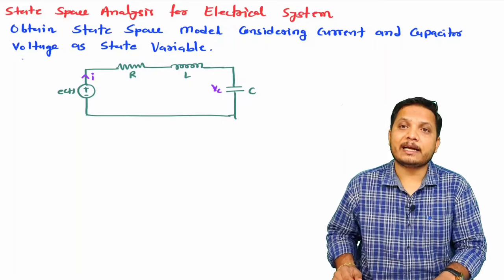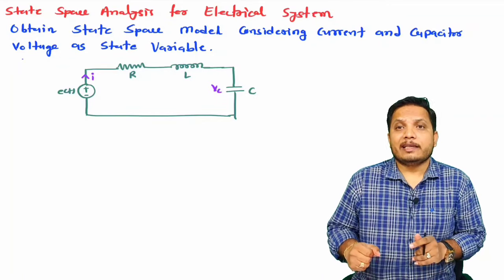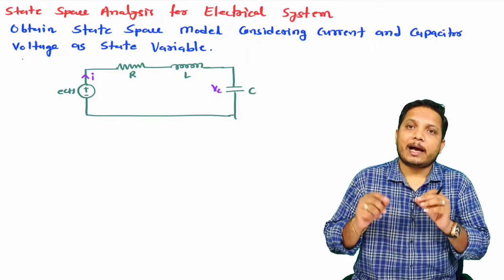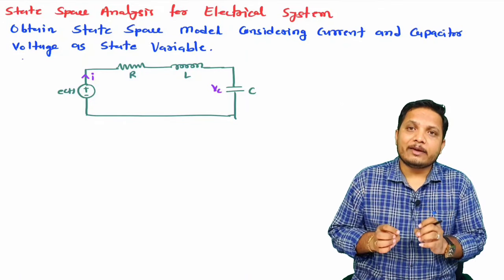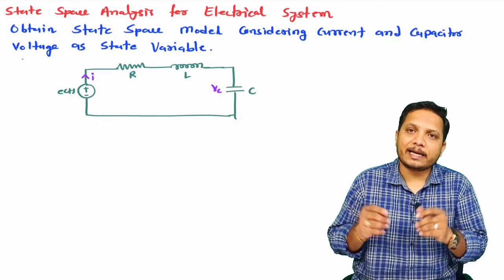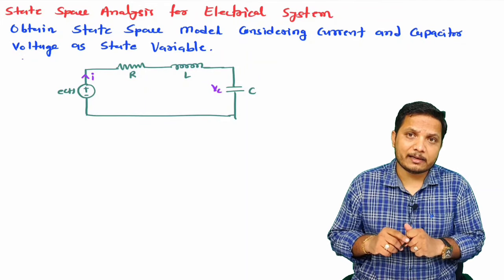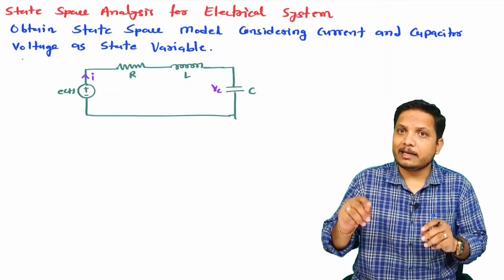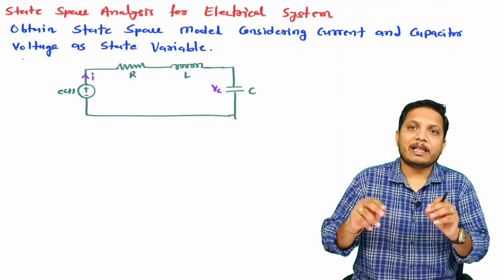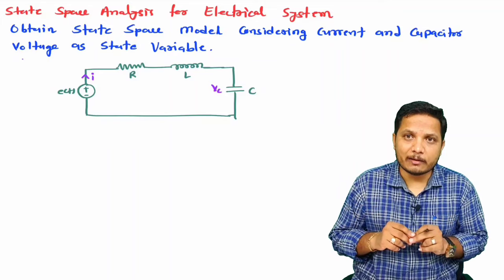There are a few basics I would like to discuss first. Whenever you have any electrical network, you will have to see how many inductive and capacitive components are there, and based on that we can identify the number of state variables. In our RLC circuit, the inductive and capacitive elements are two.